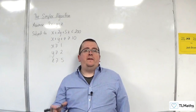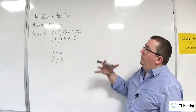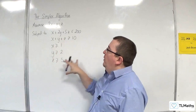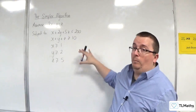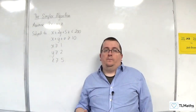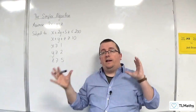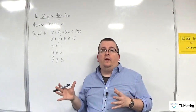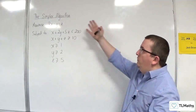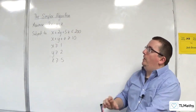All I'm interested in doing in this video is going from the original LP problem into the initial tableau. That's all I'm going to do. I'm not going to do any iterations of the simplex algorithm. Can we go straight from this into the initial tableau?